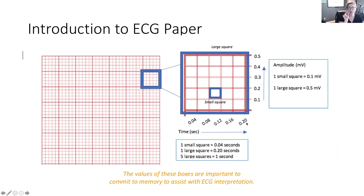Each small square is a fifth of that. Starting at time zero, the first small square is 0.04 of a second, then 0.08, 0.12, 0.16, and 0.20 of a second. Those measurements will be important as we learn to identify the different waveforms and their normal duration of time.